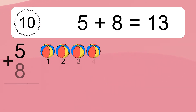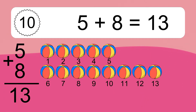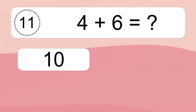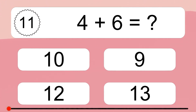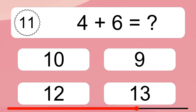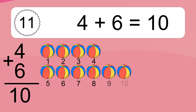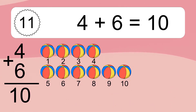5 plus 8 equals 13. Let's count it: 1, 2, 3, 4, 5, 6, 7, 8, 9, 10, 11, 12, 13. 4 plus 6 equals what? 4 plus 6 equals 10. Let's count it: 1, 2, 3, 4, 5, 6, 7, 8, 9, 10.